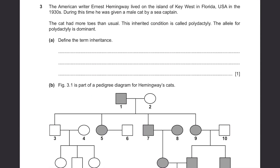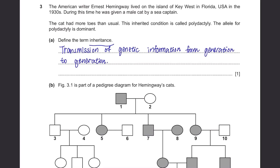Question 3. The American writer Ernest Hemingway lived on Key West in Florida, USA in the 1930s. He was given a cat by a sea captain that had more toes than usual — a condition called polydactyly. The allele for polydactyly is dominant. Part A: Define the term inheritance. Inheritance is the transmission of genetic information from generation to generation. This definition comes up in many questions, so you must remember it.